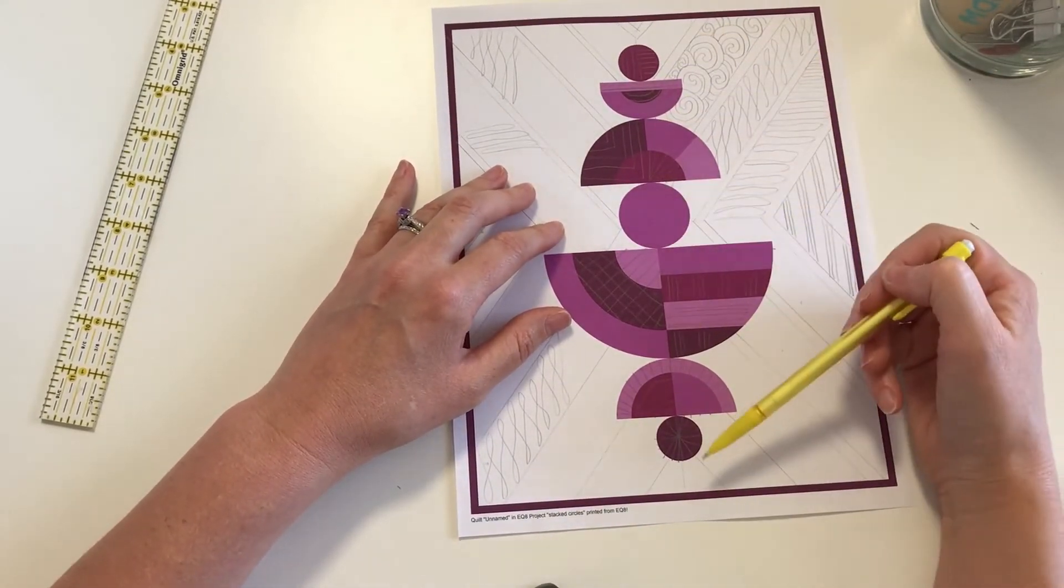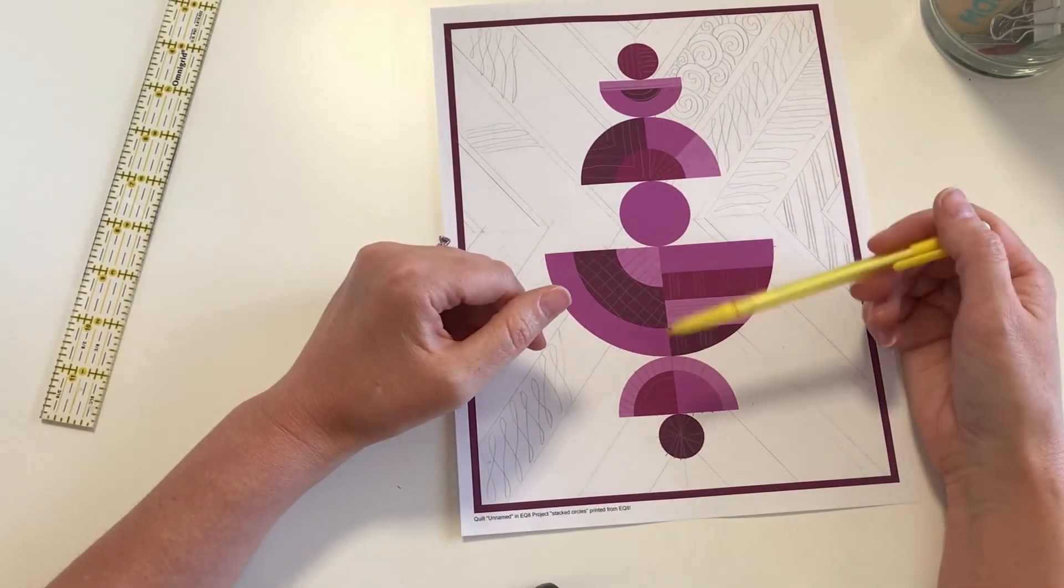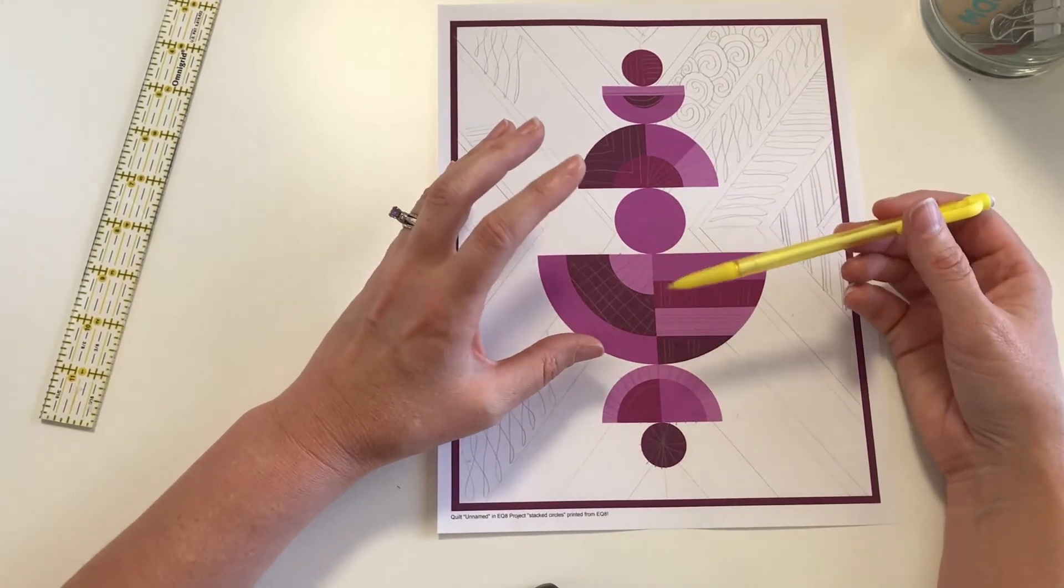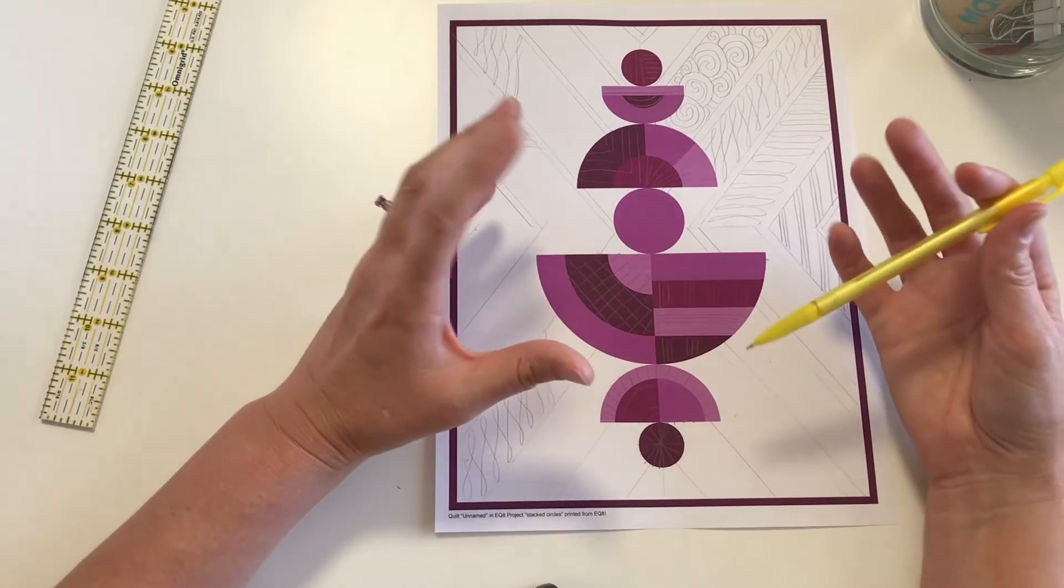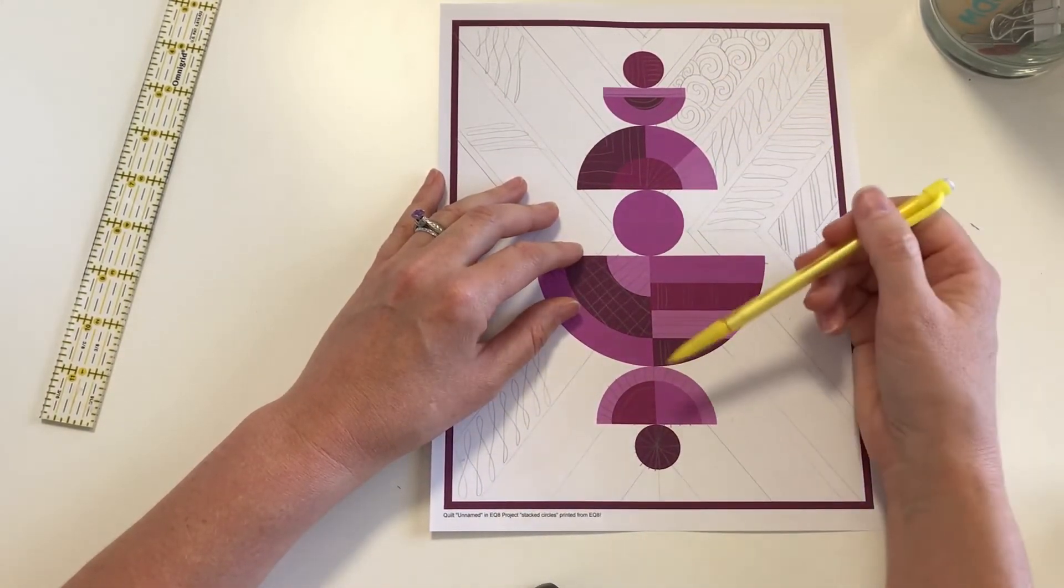You can see the quilting here, it's cohesive because it's all very similar in style and similar in density throughout that center section. It adds some interest, but it doesn't really detract from the fabrics and the bold statement of the fabrics that are there. I wanted them to read as those big, bold solids. So that was my focus with that. And then I put all of my attention into the background.